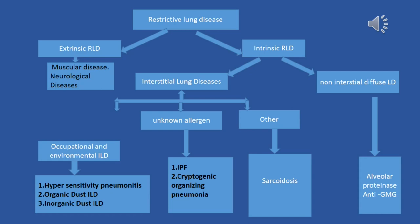If the problem is inside the alveoli, we call it diffuse non-interstitial lung diseases; if the problem is in between the alveoli, we call it interstitial lung diseases. Interstitial lung diseases can be an immune response to antigen or other causes. If we know the antigen, we categorize them separately — for example, hypersensitivity pneumonitis, organic dust interstitial lung diseases like byssinosis, and inorganic dust interstitial lung diseases like silicosis or berylliosis.